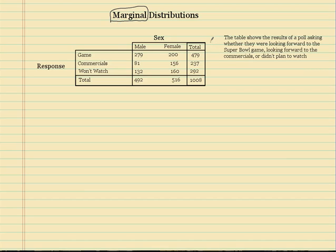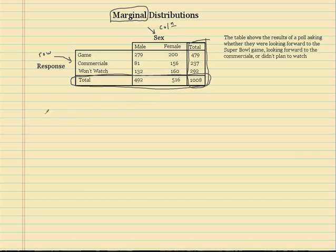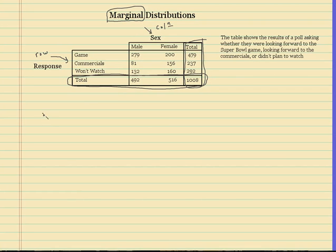Think margins. For every two-way table, you will have two marginal distributions. One for the row categorical variable and one for the column categorical variable. These are very, very simple to do. Marginal distributions is basically just a single categorical variable bar graph, which we've learned before. What this measures is each categorical variable separately.